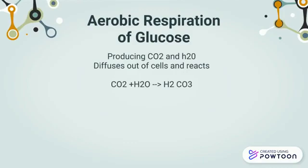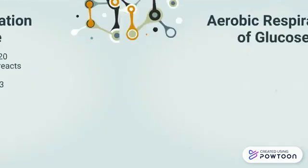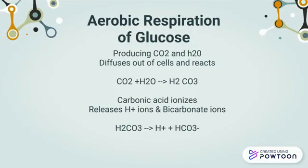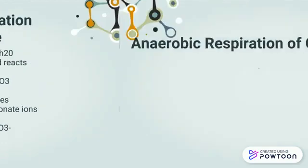Aerobic respiration of glucose produces CO2 and H2O. CO2 diffuses out of cells and reacts with H2O in extracellular fluids to form carbonic acid. The resulting carbonic acid ionizes to release hydrogen ions and bicarbonate ions.